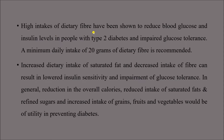High intake of dietary fiber actually reduces blood glucose and insulin levels in type 2 diabetes. Increased dietary intake of saturated fat and decreased intake of fiber can lead to lower insulin sensitivity and impairment of glucose tolerance. In general, reduction in overall calories, reduced intake of saturated fats and refined sugars, and increased intake of grains, fruits, and vegetables would be useful in preventing diabetes. Simple carbohydrates must be avoided and adequate fiber included in the diet.